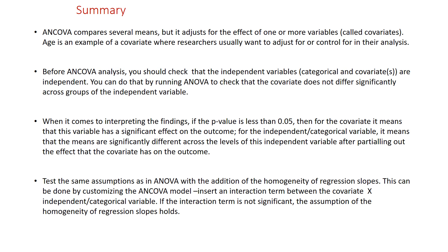In summary, ANCOVA compares several means, but it adjusts for the effect of one or more variables called covariates. Age is an example of a covariate where researchers usually want to adjust for or control for in the analysis. Before ANCOVA analysis, you should check that the independent variables, that is the main categorical and continuous covariate, are independent. You can do that by running ANOVA to check that the covariate does not differ significantly across groups of the independent variable.